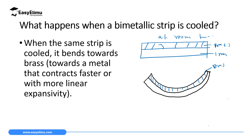To summarize: when heating, brass expands more and is on the outer part of the curve, while iron is on the inner side. When cooling below room temperature, brass contracts more and moves to the inner part of the curve, while iron contracts less and is on the outer part.